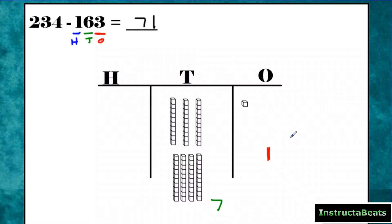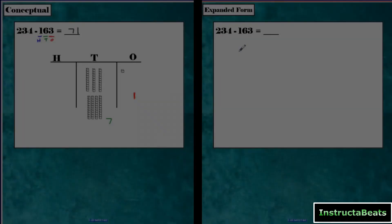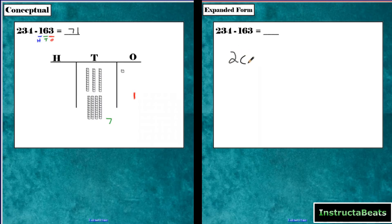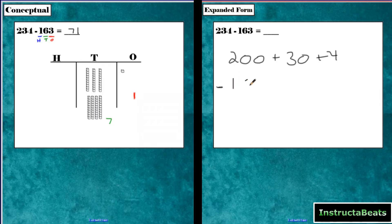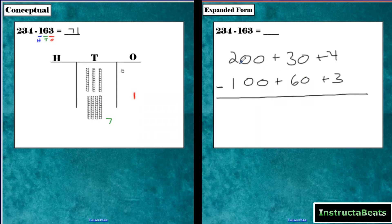Let's take a look at what this looks like with expanded form. I'm going to set up my first digit: I need to chop up 234 and turn it into 200 plus 30 plus 4. And then I'm going to subtract 100 plus 60 plus 3. Notice that 200 plus 30 plus 4 is the exact same thing we started with in our base-10 blocks — we had 200s, three 10s, and four 1s.